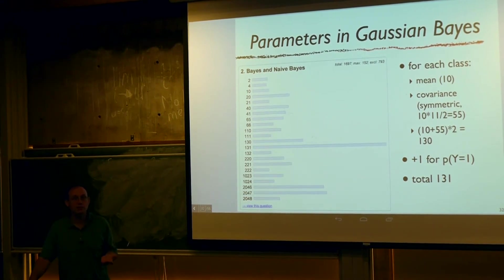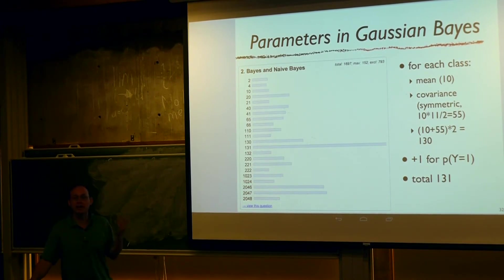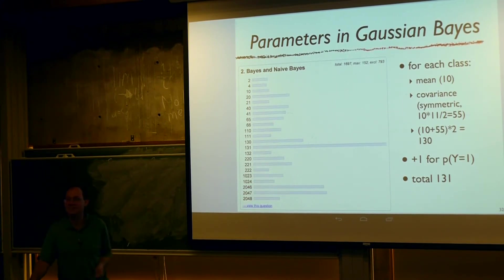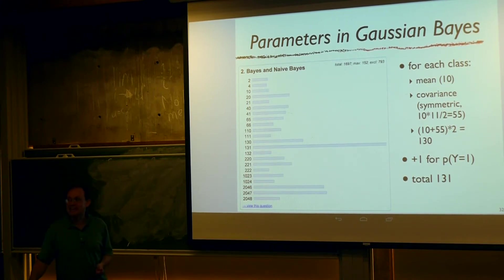On the topic of questions people had trouble with, this was probably the biggest one, so I figured I'd mention it at the beginning of class. The question was about how many parameters are in a Gaussian Bayes classifier. Here's the histogram of answers people gave. The largest bar is the correct answer — congratulations to everybody who got that.